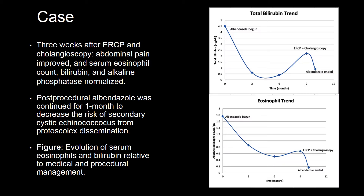Three weeks after ERCP and cholangioscopy, abdominal pain improved and serum eosinophil count, bilirubin, and alkaline phosphatase normalized. Post-procedurally, albendazole was continued for one month to decrease the risk of secondary cystic echinococcosis from protoscolex dissemination. The figure on the right shows the evolution of serum eosinophils and bilirubin relative to medical and procedural management.